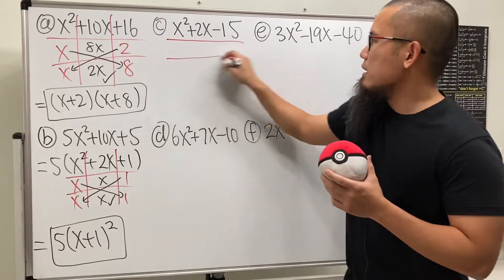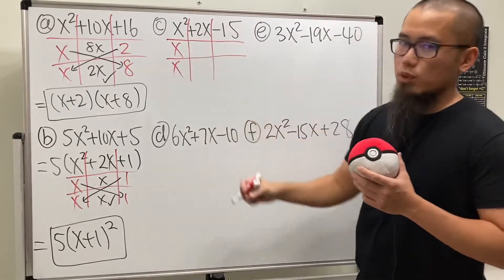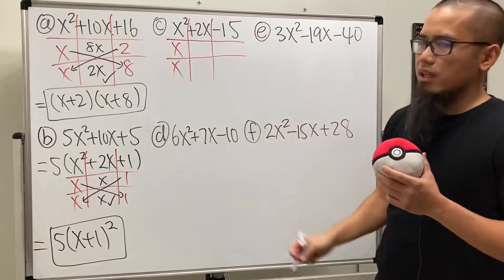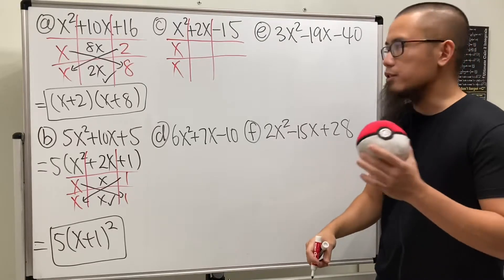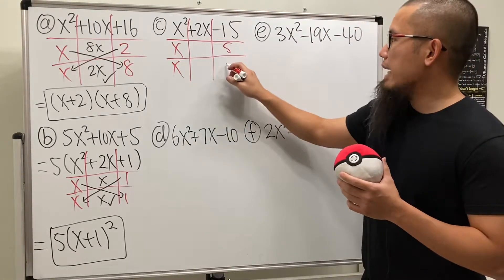Next one. Tic-tac-toe box in action. x times x gives us the x squared. And then to get negative 15, let's use 5 and 3. But one of them has to be negative, right? Let's put down 5 and negative 3.